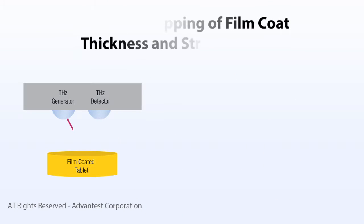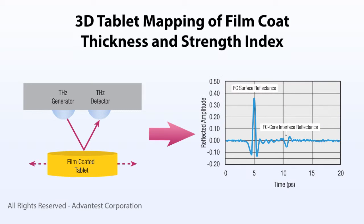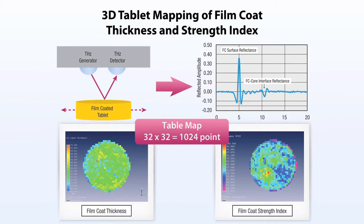Three-dimensional mapping is achieved by recording a trace for each discrete spot in the array covering the tablet surface. The 3D map shows the spatial uniformity of film coat thickness, and additional parameters, such as film coat strength, can also be derived from the same dataset.